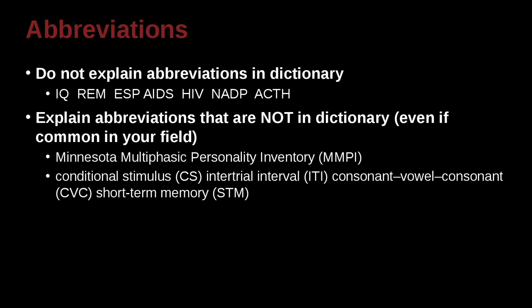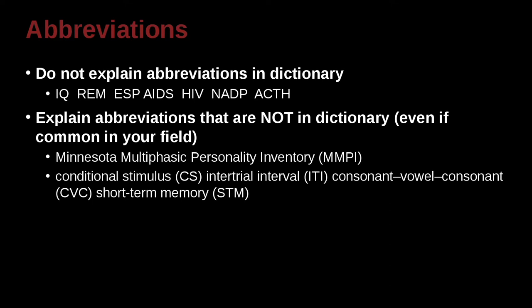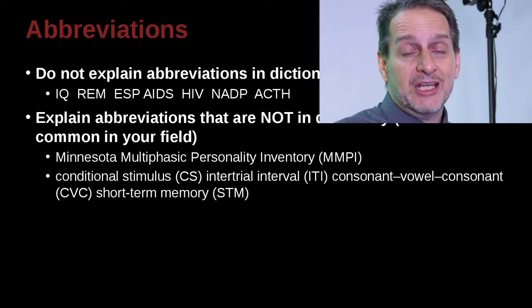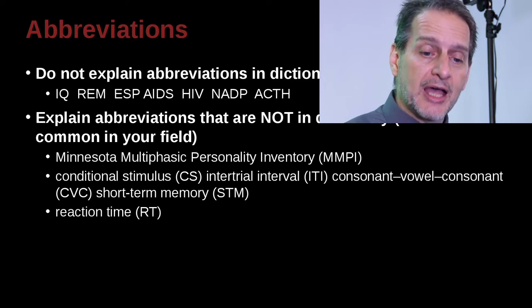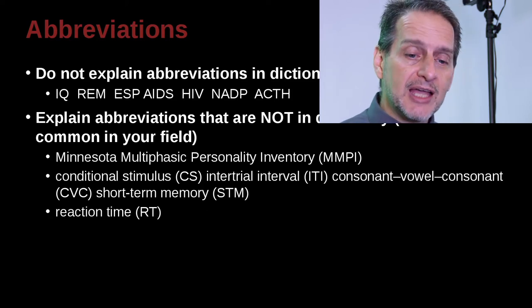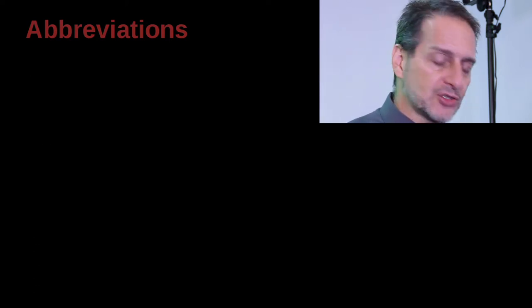So for example, Minnesota Multiphasic Personality Inventory, or MMPI. This is the first time it is in the paper. This is very common. Everybody in the field of psychology knows this. But anyway, the first time you explain it. Again, though, it depends on your journal. Follow the rules you're targeting. Here's another example. Conditional stimulus, intertrial interval, constant vowel constant, short term memory. So all of these are really common, very, very normal. But anyway, explain them the first time. Reaction time, and so on.